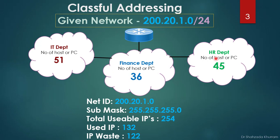Let's start with a scenario. Here is an organization with three departments: IT department, Finance department, and HR department. The IT department requires about 51 PCs or hosts, so they need 51 IPs. Finance department requires 36 IPs, and HR department requires 45 IPs. The given network address is 200.20.1.0/24.